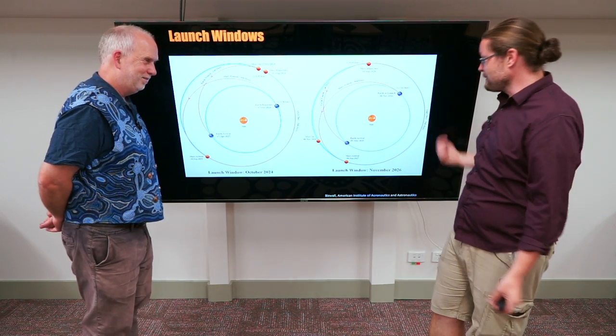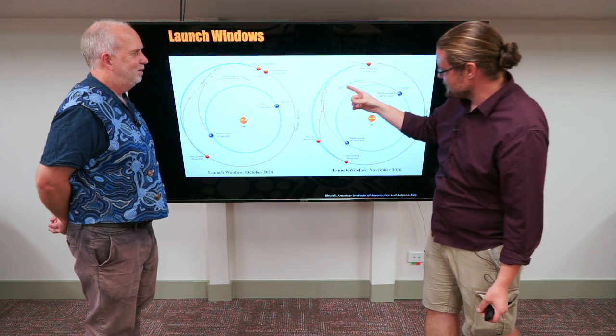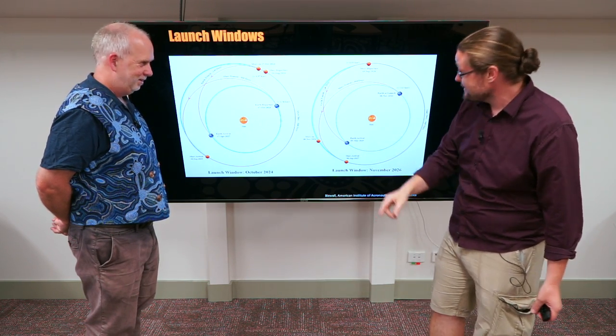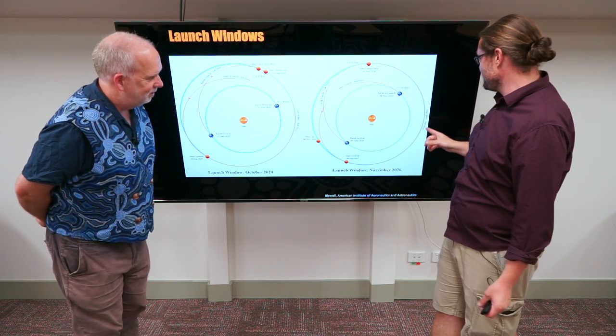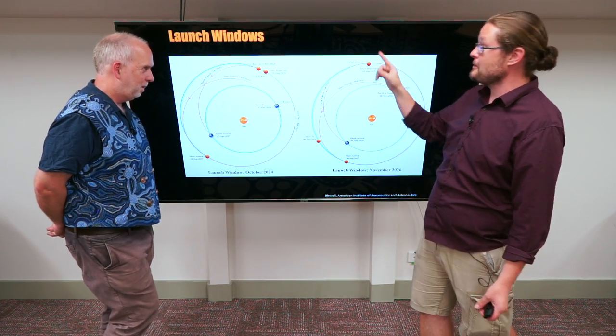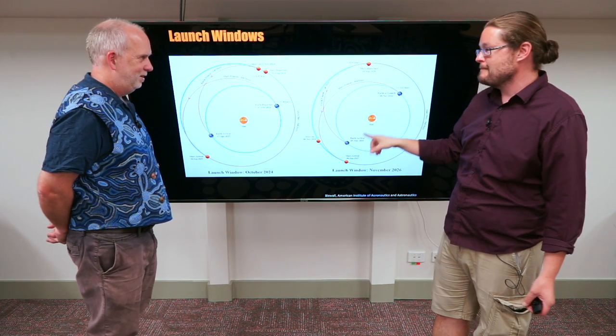So you now have to repeat the process. You leave November 8th, you spend 304 days arriving in September 2027, then you wait over a year, 368 days till September 2028, to spend 240 days to come back, May 2029.